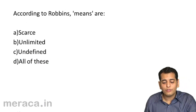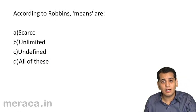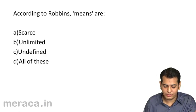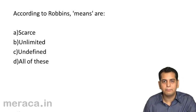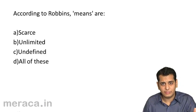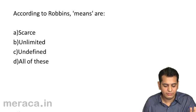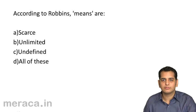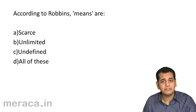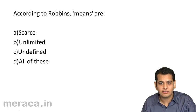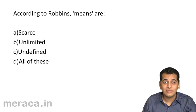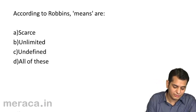According to Robbins, means are: A. Scarce, B. Unlimited, C. Undefined, D. All of these. Robbins defined means as scarce.